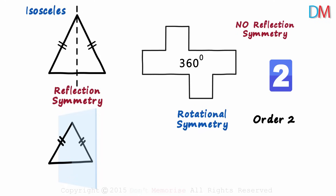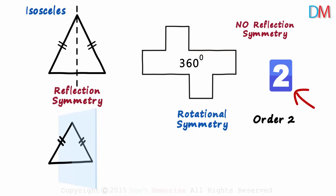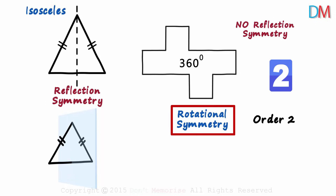To recap — when do we say that a shape has rotational symmetry? A shape has rotational symmetry if it looks exactly like the original shape a number of times when rotated about the center point by 360 degrees. Here, the number of times it looks like the original is 2, so we say that this shape has rotational symmetry of order 2.